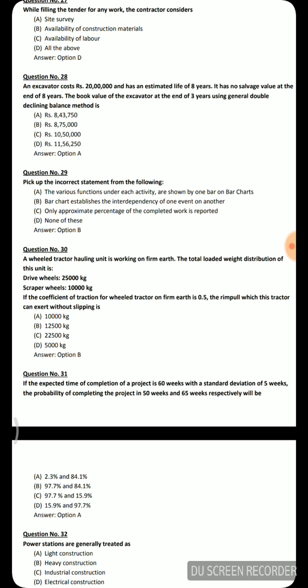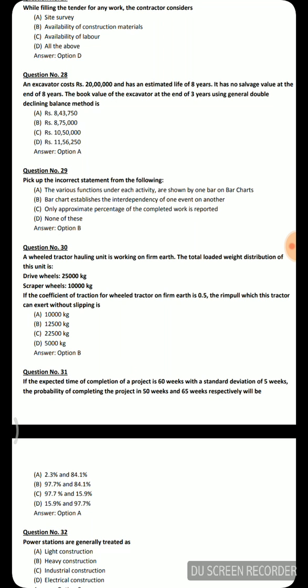Next question — read carefully, it says pick up the incorrect statement. Option A: various functions under each activity are shown by one bar on bar charts. Option B: bar chart establishes the interdependency of one event on another. Option C: only approximate percentage of completed work is reported. Option D: none of the above. The correct answer is option B — bar chart does not establish interdependency of one event on another.